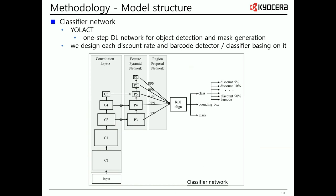As for the model structure, the classifier network is the core recognition engine of the scan system. The design of the classifier is our solution to effectively maintain the balance between processing time and recognition performance. As shown in the figure, we adopt YOLACT from the existing classifiers. It is a one-step deep learning network that performs independent instances of object detection and mask generation. In our classifier design, we categorize all possible discount rates and buckles.